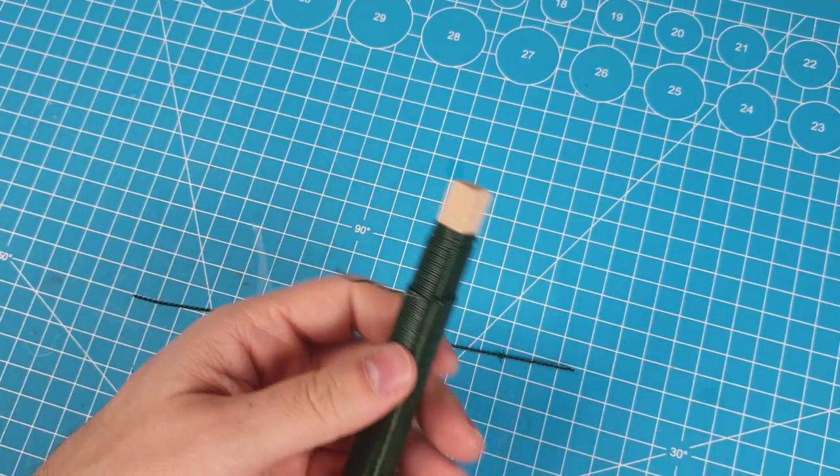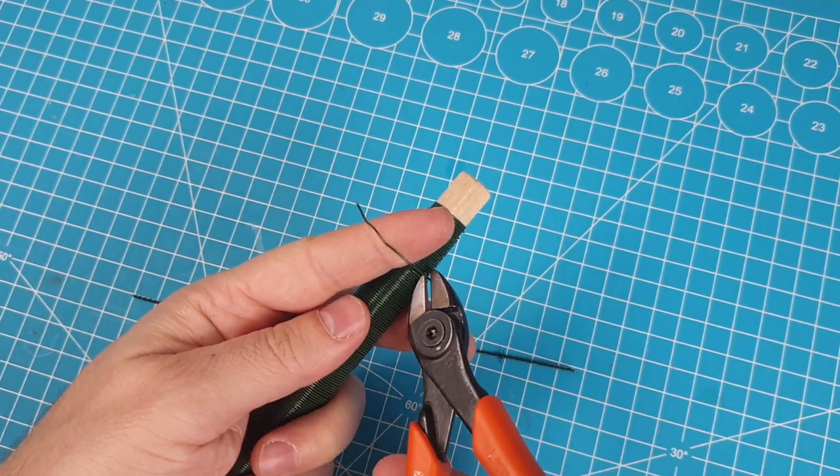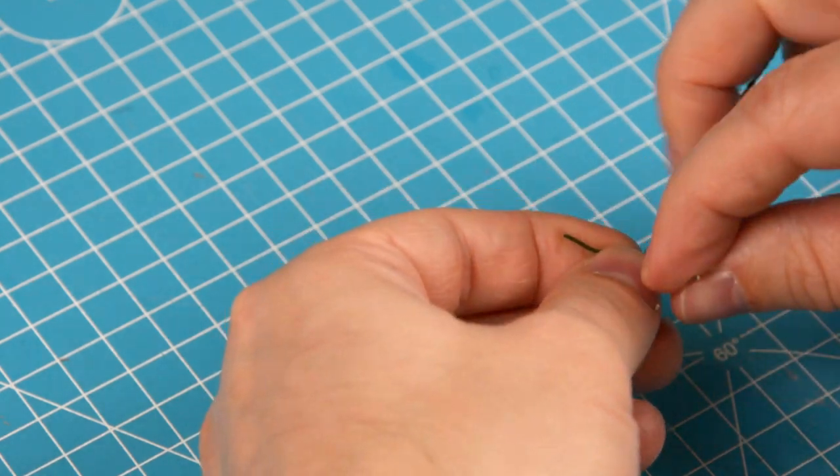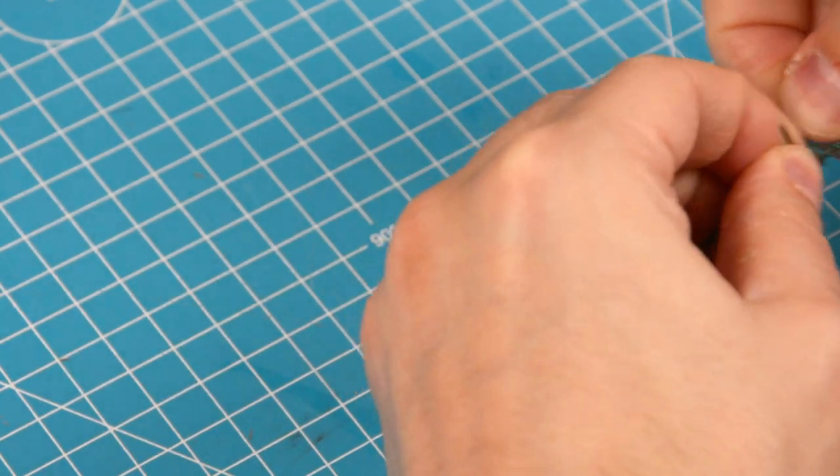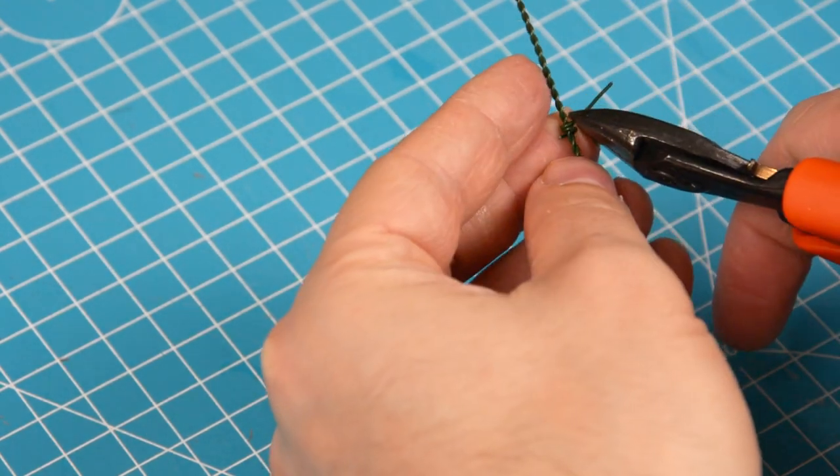Now you can add barbs to the wire if you want to. Take a small piece of wire and wind it around the main wire a couple of times. Then cut the ends to a fitting length.